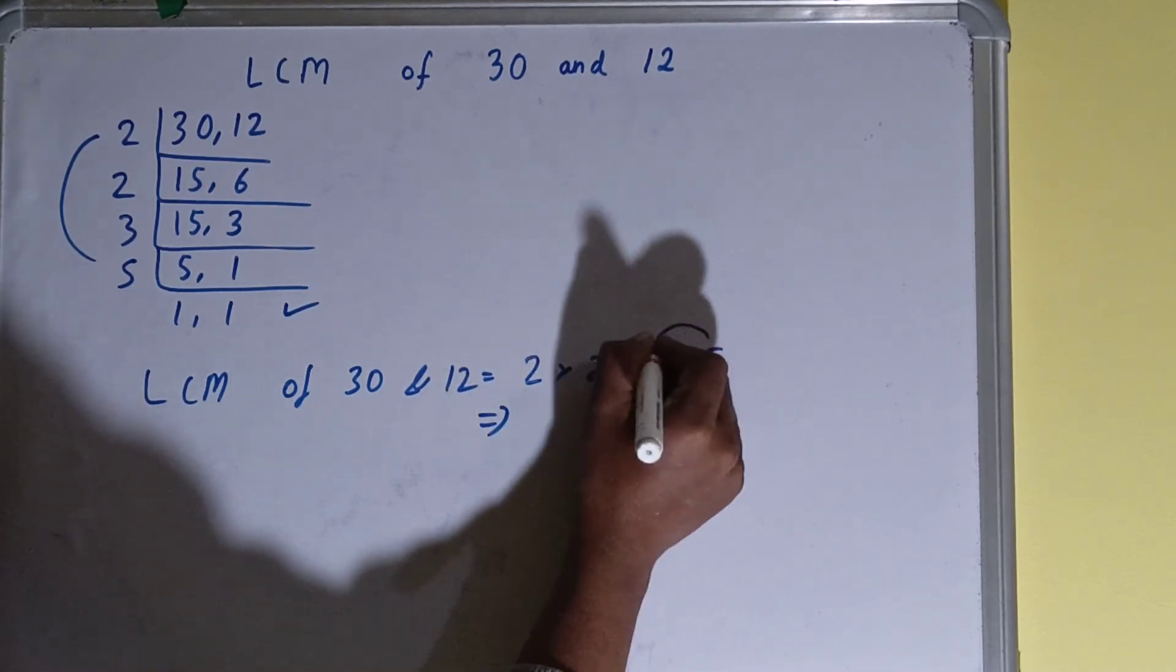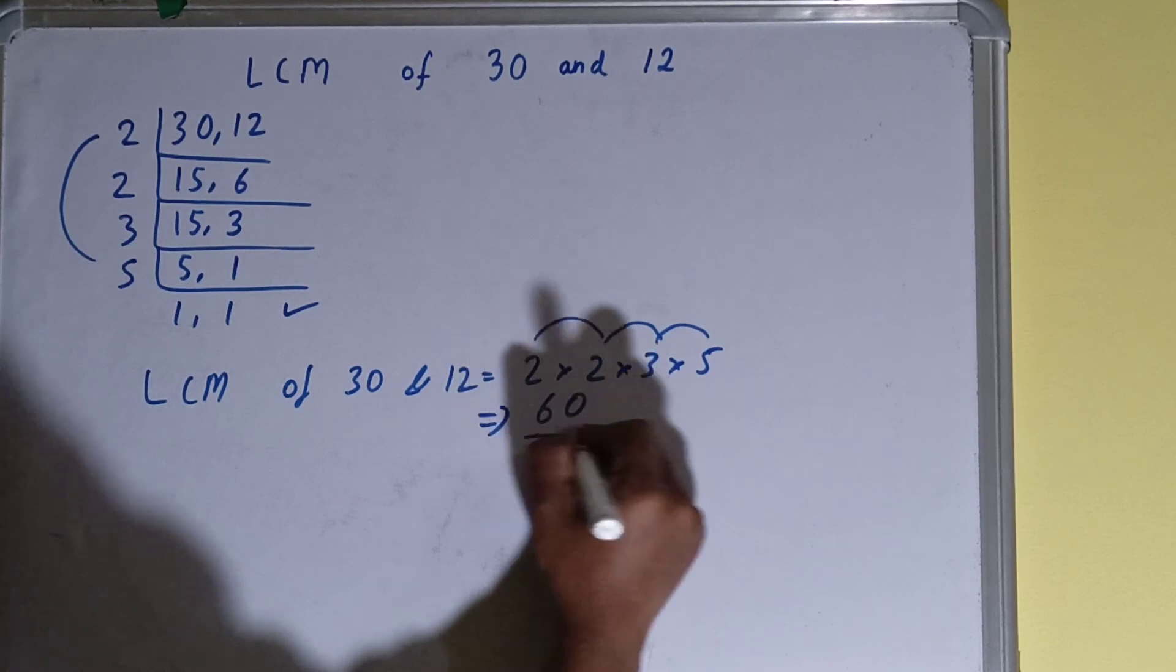So the answer will be: 2 times 2 is 4, times 3 is 12, times 5 is 60.